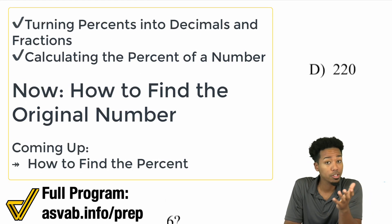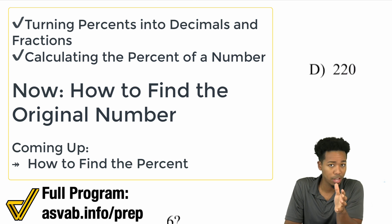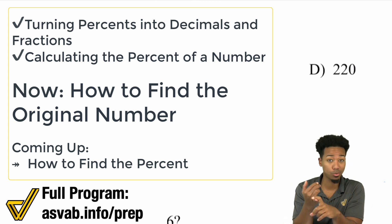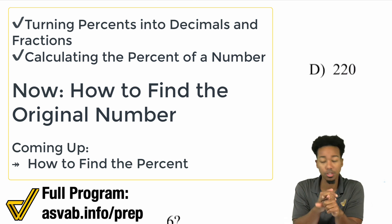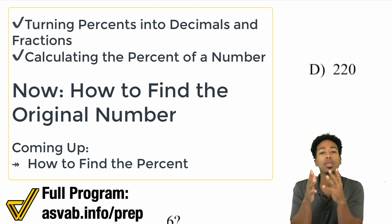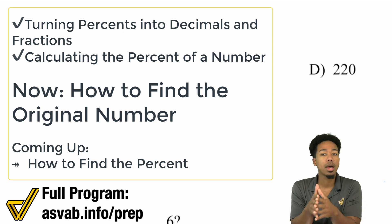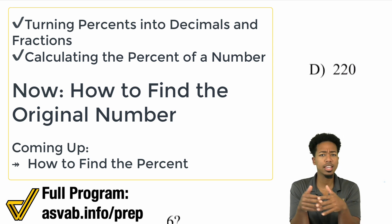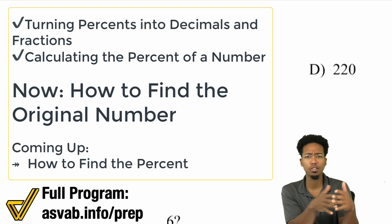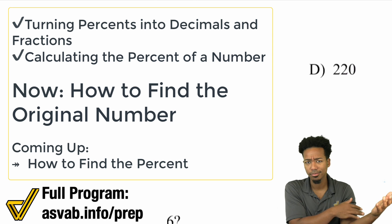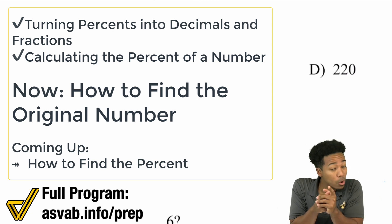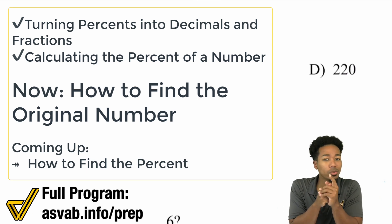In the previous video, if you didn't catch it already, remember you should have practiced with those worksheets and speed drills. We went over how to just straight up take the percent of a number — like, 5% of 100 is what? Now we're working backwards to find what that original number was.